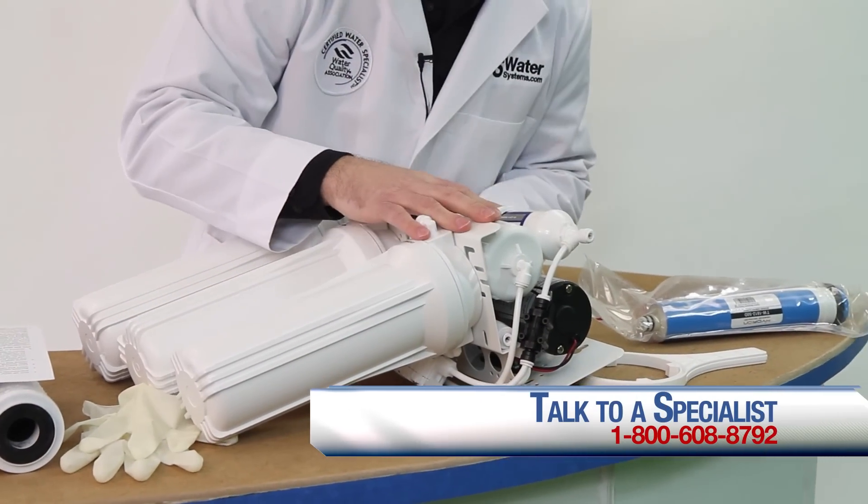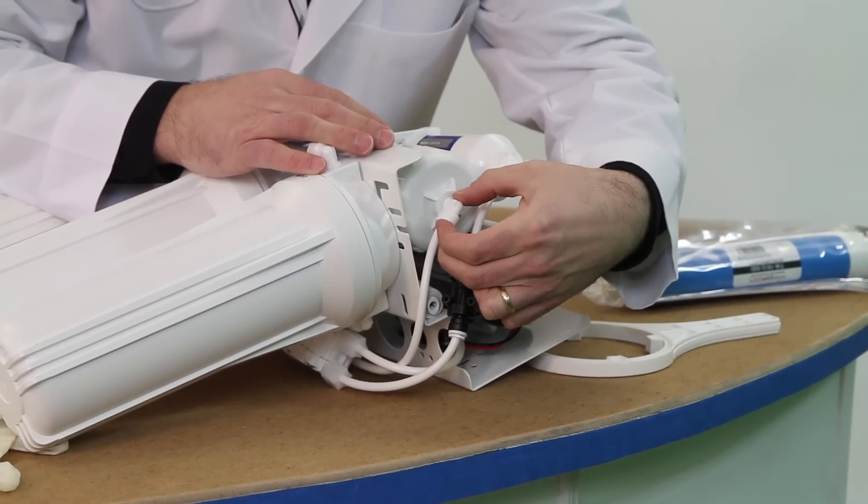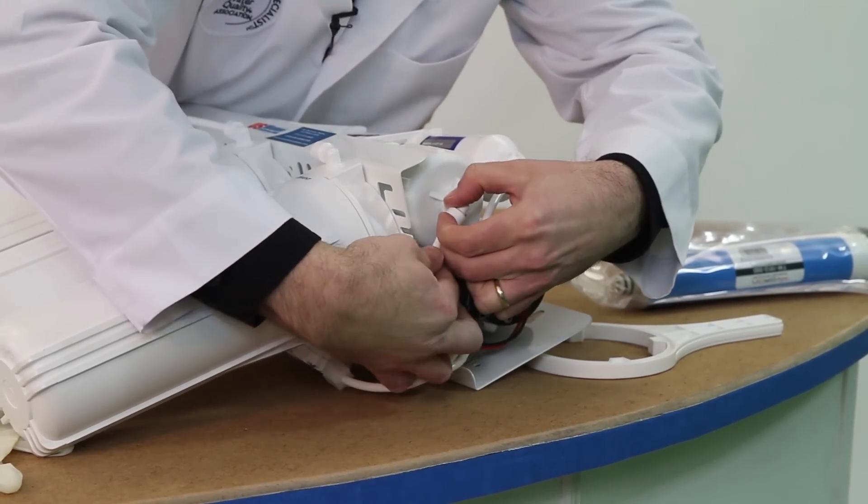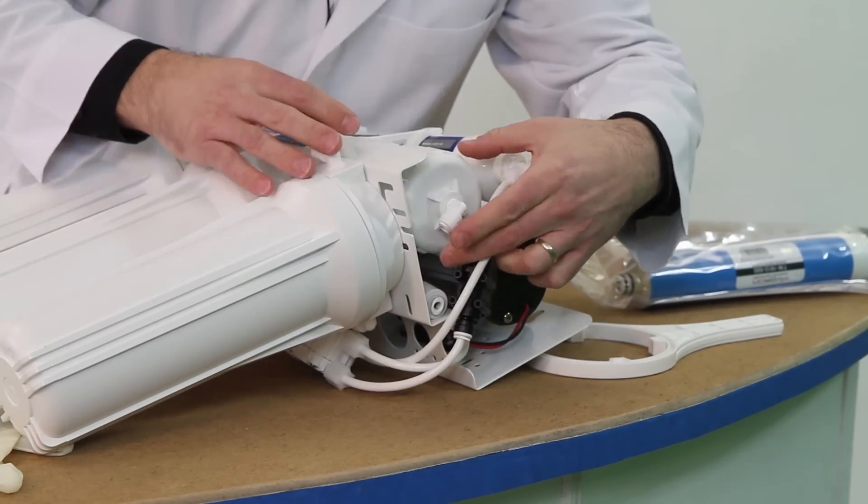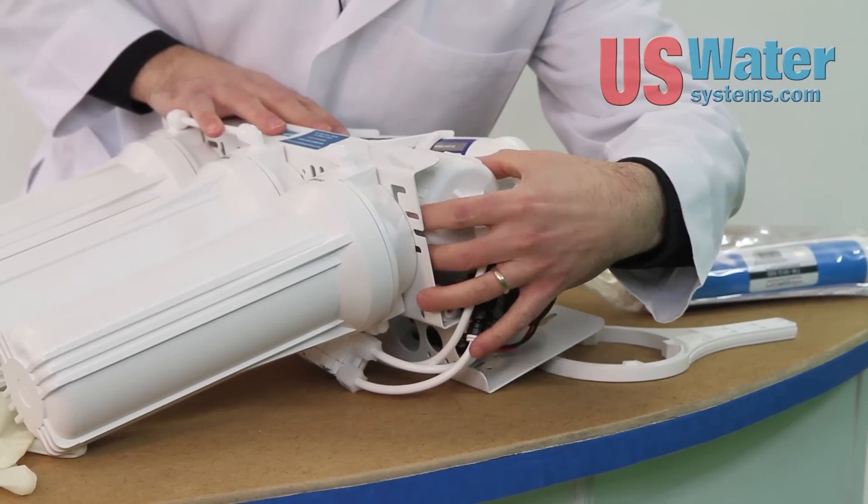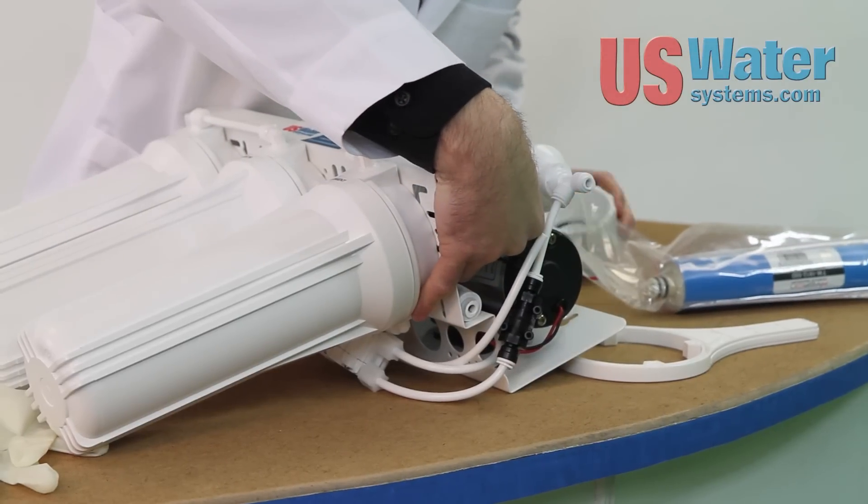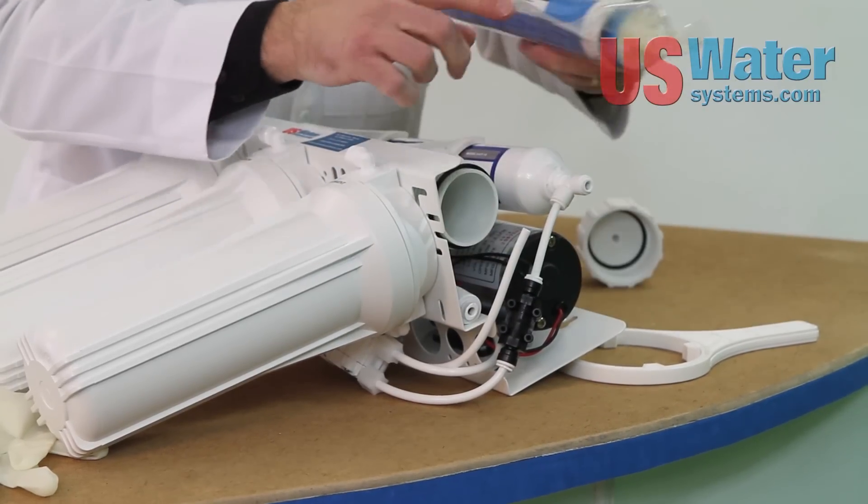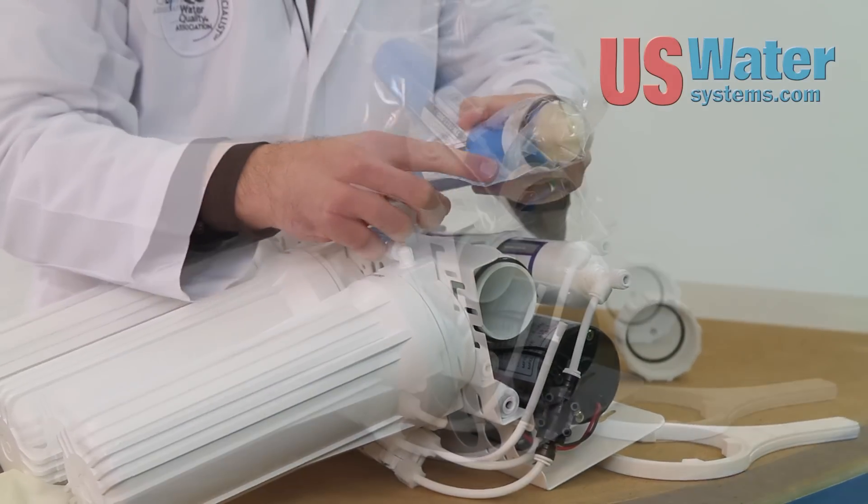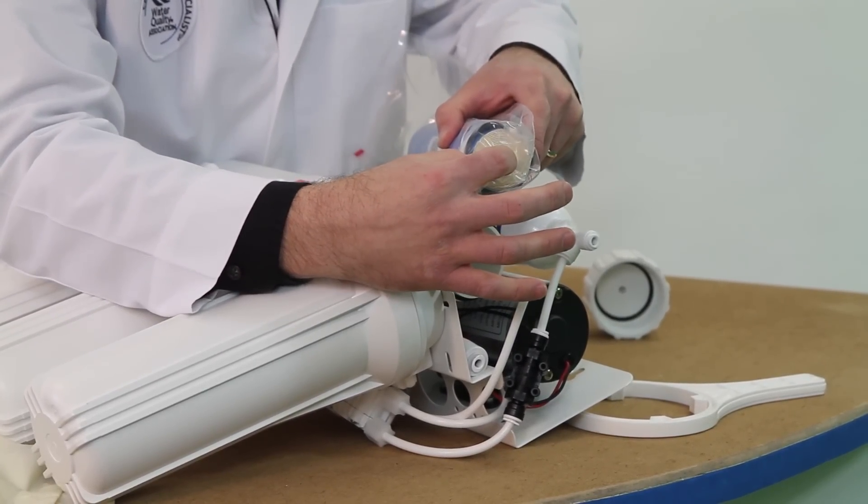You're going to remove the membrane and all filters. Press down on the collar or collet of the Quick Connect fitting. Remove the tube by pulling straight out. This will be unscrewed and the membrane will be removed. It will be sealed tightly due to the brine seal on the outside of the membrane. You might need some pliers. You just want to be careful not to damage the end when removing it.